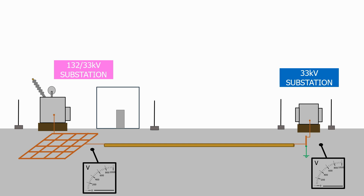The first problem is that anything connected to the grounding grid of our substation that has gone faulty will also rise by the same GPR amount. Here we have our 132 to 33kV substation connected via an underground cable to a 33kV distribution substation. If a fault now occurs on the main station, the voltage potential of our grounding grid will now increase to 960 volts.